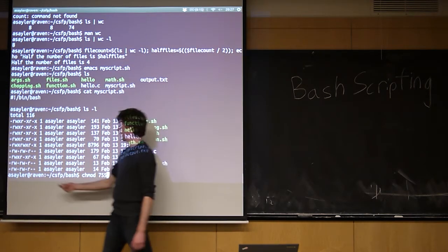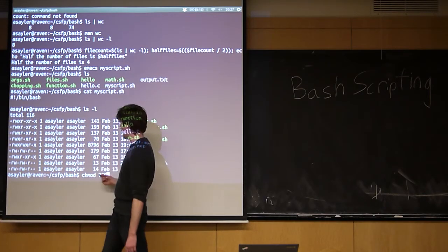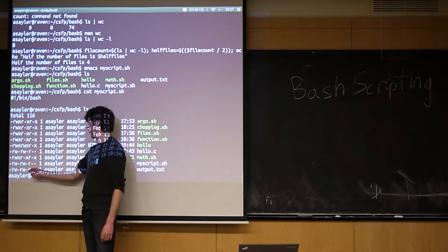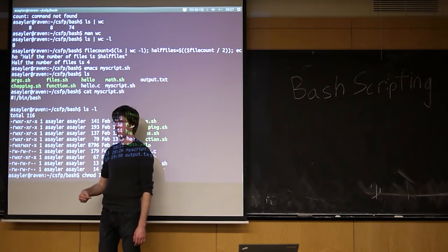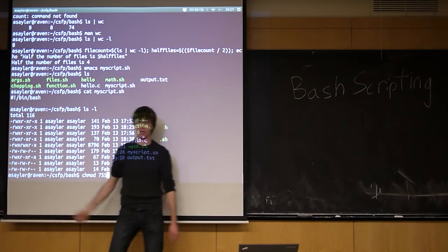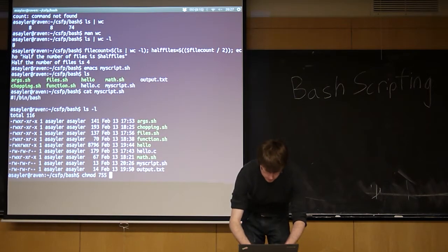So the 7 is saying I want to read, write, and execute. And then the 5 is saying I want to read and execute. The other 5 is read and execute. So I'm saying I can edit the file, and I can run the file, and I can read the file. Everyone else on the computer can only read and execute. I'm going to type in my file name.